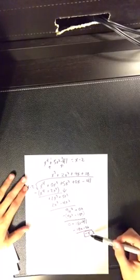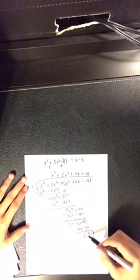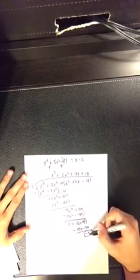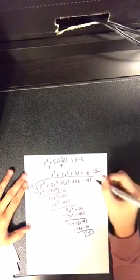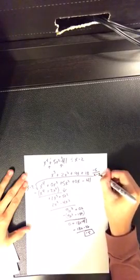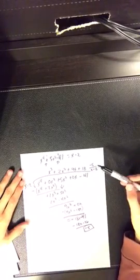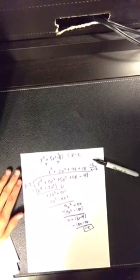Once you have that completed, it gives you your remainder. My remainder is negative 5, so I would take negative 5 and put it over our divisor, which would be x minus 2. And that is your long division.